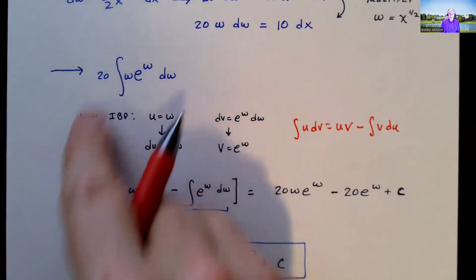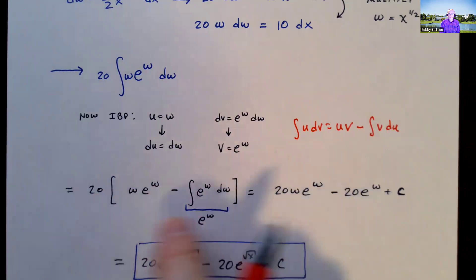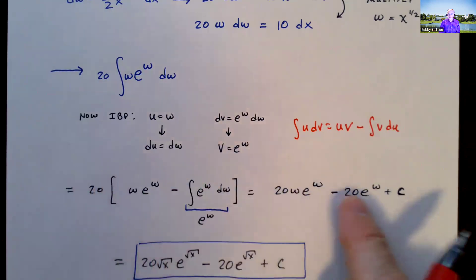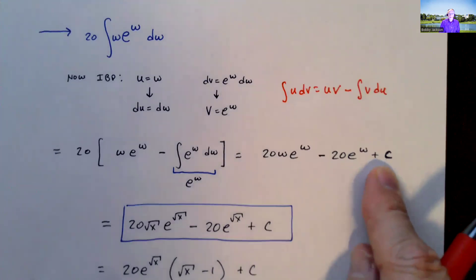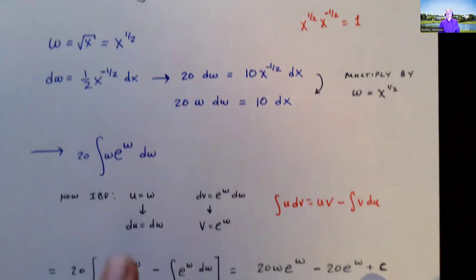Don't forget my 20 that's out here. I'm going to distribute that through 20 w e to the w and then times negative 20 e to the w. So this is the result. But remember, we need to go back to the original variable, which was x. And w is equal to the square root of x or x to the one half.